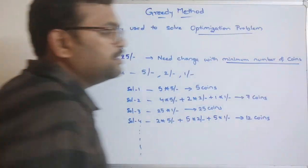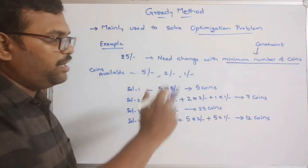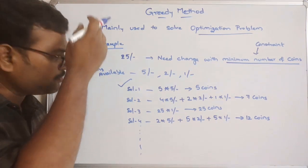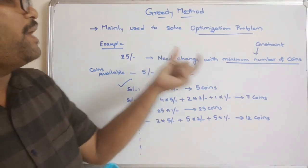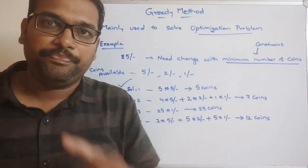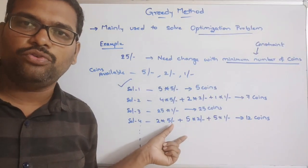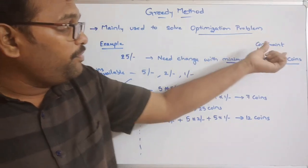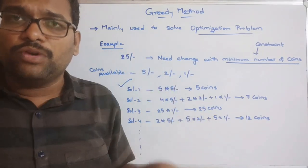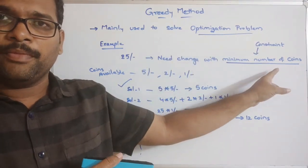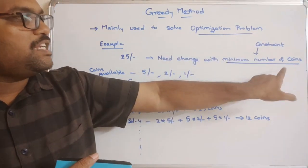The minimum number of coins is the constraint. Based on that constraint, we select the optimal solution — which is 5 coins (five 5-rupee coins) — from all the feasible solutions. If there is no constraint, anything can be accepted. But if there is a constraint, from the multiple alternatives we must select the best solution that satisfies the given constraint. This is the procedure for finding the optimal solution for an optimization problem, and this procedure is called the greedy method.